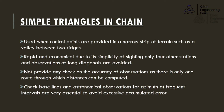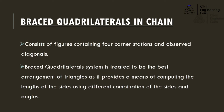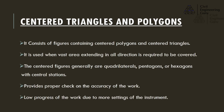Braced quadrilaterals in chain consists of figures containing four corner stations and observed diagonals. The braced quadrilateral system is considered the best arrangement of triangles, as it provides a means of computing the lengths of the sides using different combinations of sides and angles. Centered triangles and polygons consist of figures containing centered polygons and centered triangles, used when a vast area extending in all directions is required to be covered. The centered figures are generally quadrilaterals, pentagons, or hexagons with central stations, providing a proper check on the accuracy of the work, though progress is slower due to more instrument settings.